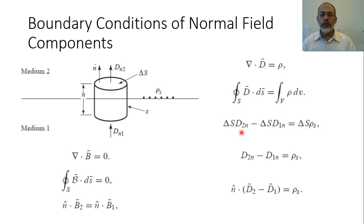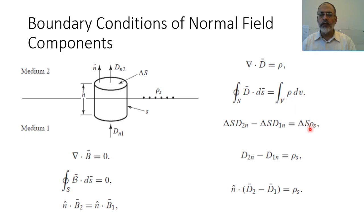The charge included inside this incremental volume is effectively the surface charge density ρ_surface multiplied by the surface area included inside the volume, so the total charge is ρ_surface · ΔS. The integration of ρ dV is simply ρ_surface · ΔS. By eliminating ΔS, we can say that D_normal2 minus D_normal1 equals the surface charge density ρ_surface.